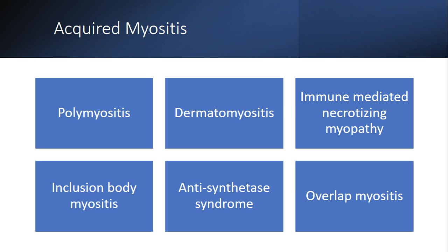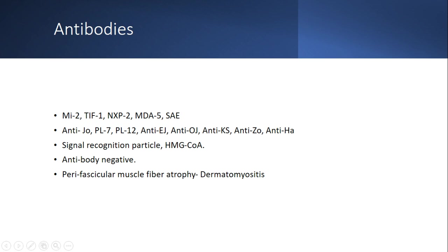For myositis, there is overlap: dermatomyositis and polymyositis are often grouped, though true polymyositis is rare — most cases are dermatomyositis, which has known cancer associations. Immune-mediated necrotizing myopathy and inclusion body myositis are grouped separately. When evaluating a myositis question, check for mentions of myocarditis or interstitial lung disease — if present, inclusion body myositis and immune necrotizing myopathy are ruled out, pointing to dermatomyositis or antisynthetase syndrome.